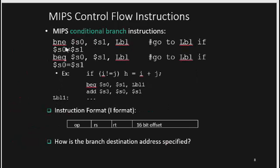For the binary representation of a branch instruction: the binary representation of $s0 is stored in RS, the binary representation of $s1 is stored in RT, and the binary representation of the target label offset is stored in the 16-bit offset field.